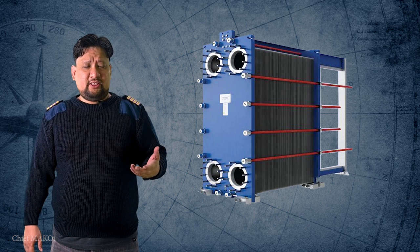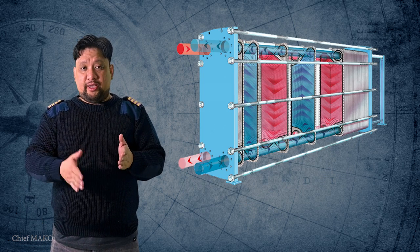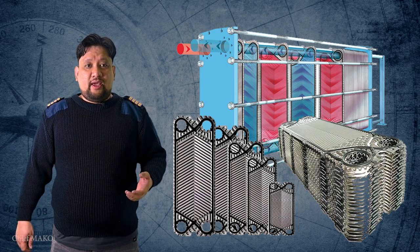The principle of operation of plate type coolers is the same but instead of tubes, this design uses metal plates, usually stainless steel or titanium, and instead of a shell casing, both fluids flow through either side of the plates alternately.